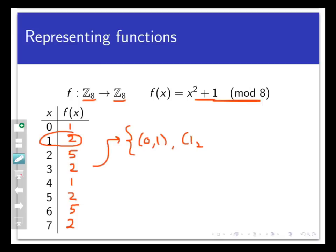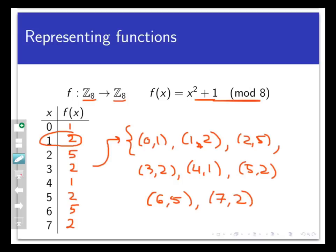For example, we could say that my function here, called f, is this set of ordered pairs. Now this set of ordered pairs fully specifies the function. I can see, for example, that f of 6 equals 5 because the pair 6, 5 is in the set.